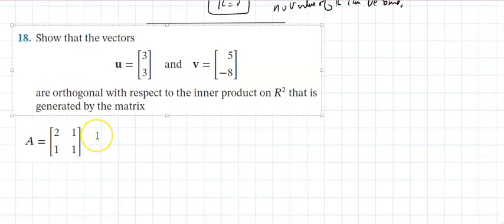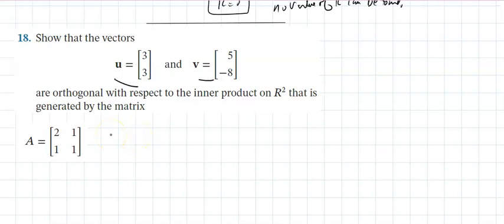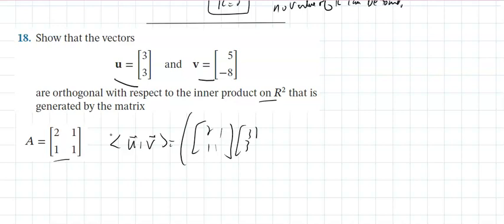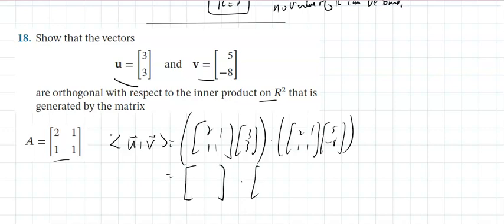To show orthogonality with respect to the inner product generated by the matrix A equals [[2,1],[1,1]], compute A times u and A times v. Multiplying gives [9, 6] and [2, negative 3] respectively. The inner product is then 9 times 2 plus 6 times negative 3, which equals 18 minus 18 equals 0 — confirming the vectors are orthogonal with respect to the matrix-generated inner product.